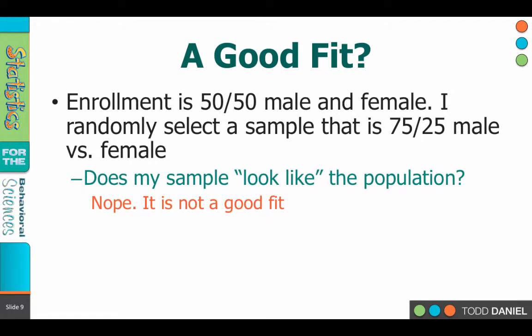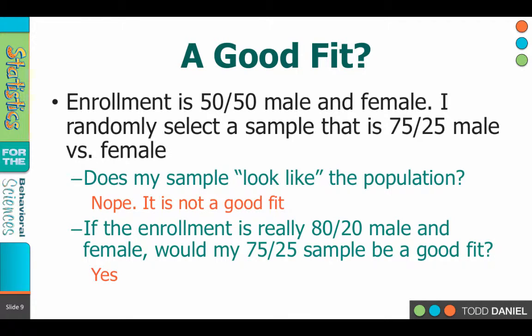No, that's not really a good fit. But assuming that you had an 80-20 split of college students, then your 75-25 sample would fit pretty good — that'd be all right, so that would be a good fit. So it all depends on what we expect to find, and our expectations rest upon our assumptions. What do we expect? What did we find? Is what we found a good fit to what we expected to find?